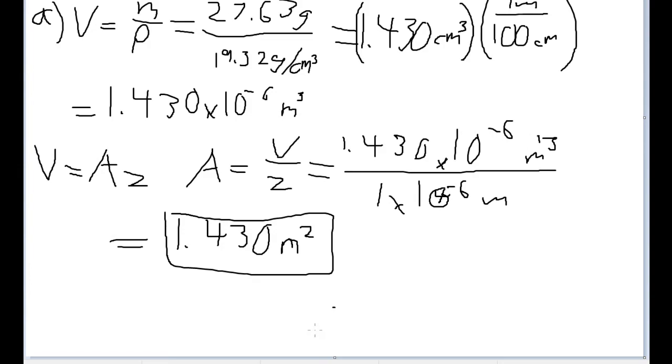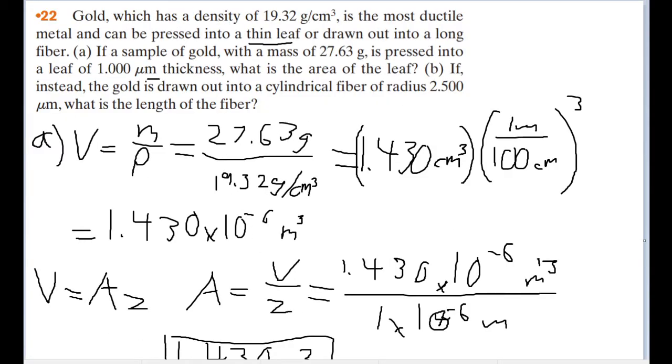Now part B asks, if instead the gold is drawn out into a cylindrical fiber of radius 2.500 micrometers, then what is the length of the fiber?